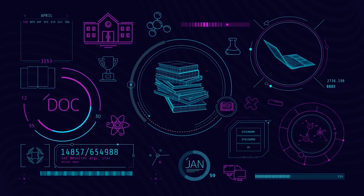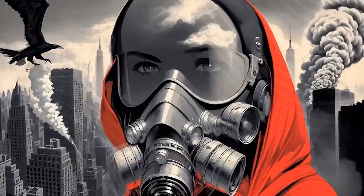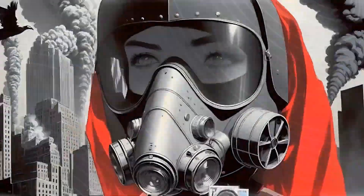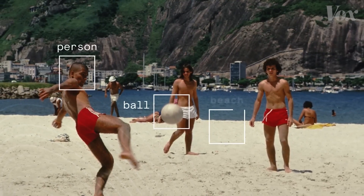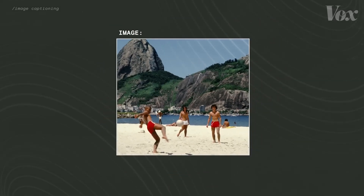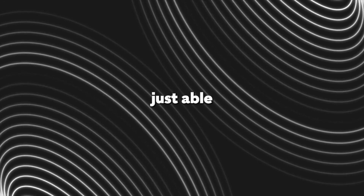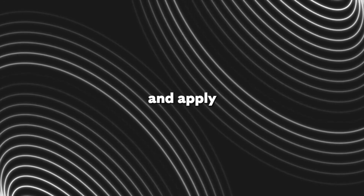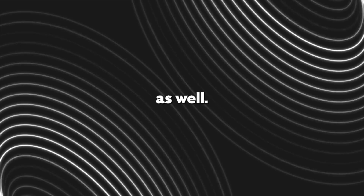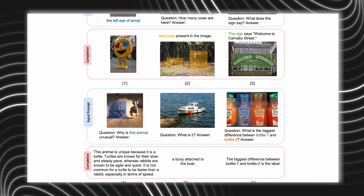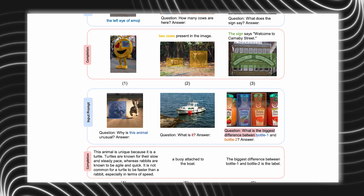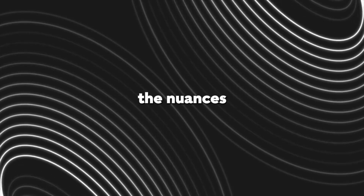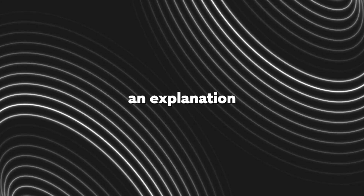This next demonstration of Cosmos 2 really shows what sets this model apart from others. Other models offer image identification, captioning, and maybe even some editing. Cosmos 2 isn't just able to identify images, but is able to understand and apply common logic to them as well. This is showcased in example number 4, where it can tell that the image is unusual because turtles don't commonly run faster than rabbits in a head-to-head race. Cosmos 2 is able to understand the nuances of an image and provide an explanation to them.